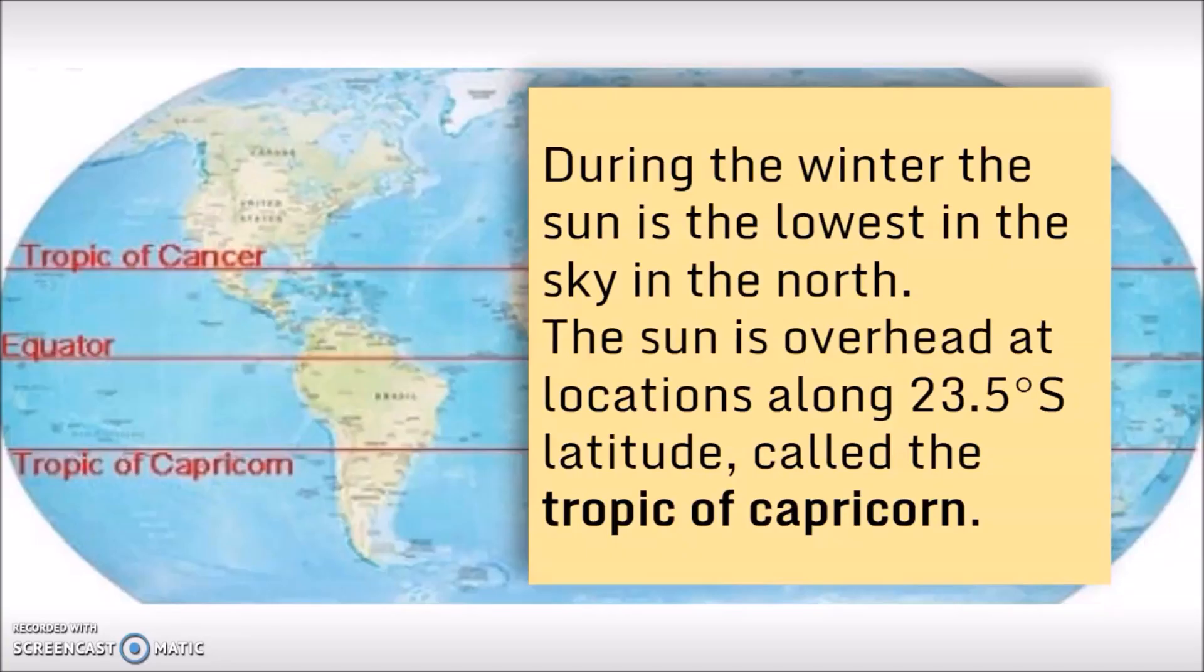The first day of winter in the north is on December 21st. During the winter, the Sun is the lowest in the sky in the north. The Sun is going to be overhead, or the highest in the sky, at locations along 23 and a half degrees south latitude, and this line on the map is called the Tropic of Capricorn.